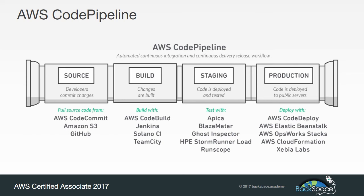Our developers can use a Git repository — we're going to use GitHub — but it could also be AWS's Git repository, which is AWS CodeCommit, or we could use an Amazon S3 bucket. I wouldn't recommend that though; it's best to use a Git repository because you get all the advantages of collaboration and version control, and your developers will be very happy to use that.